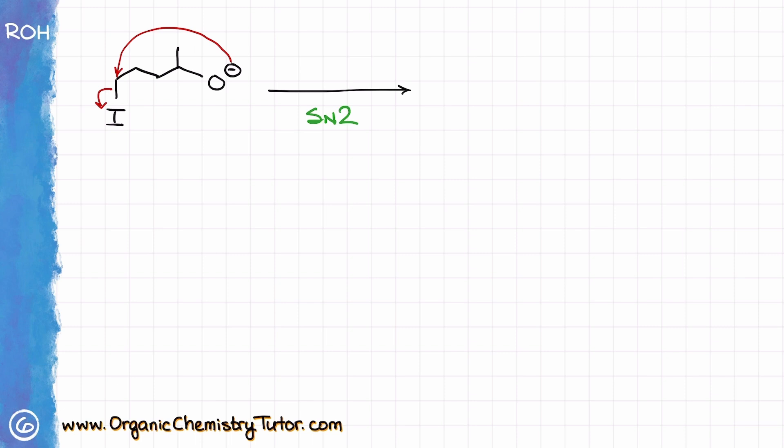But now we have a problem. How exactly am I going to draw the product of this intramolecular SN2 reaction? Well, the easiest trick that I can think of is going to be by numbering my atoms. So typically, I like to number my atoms from the nucleophile to electrophile, although it really doesn't matter how you do it. So I will start by numbering one, two, three, four, and five, just like that.